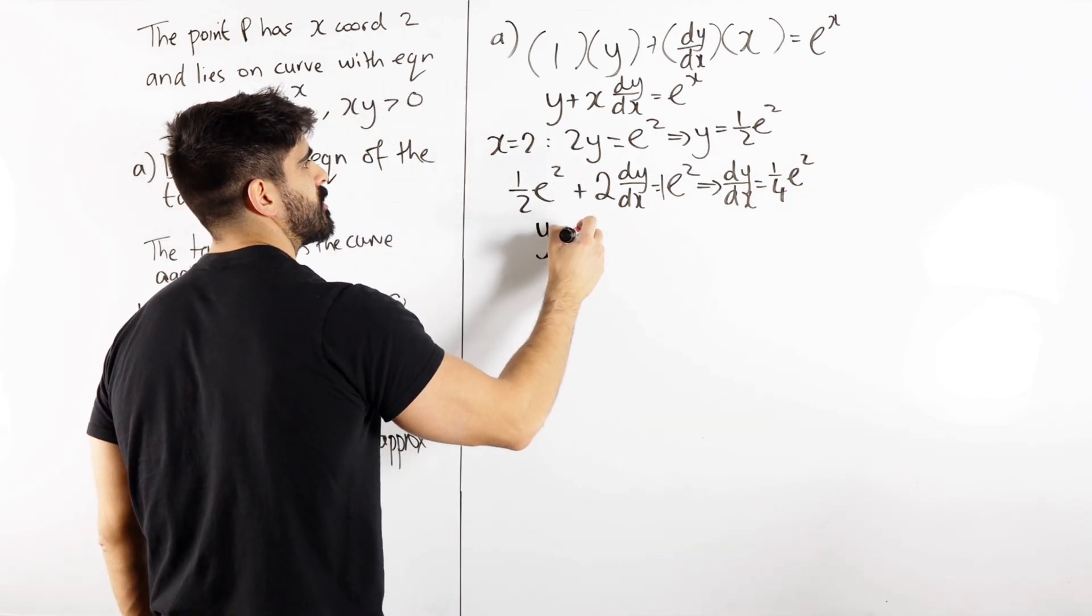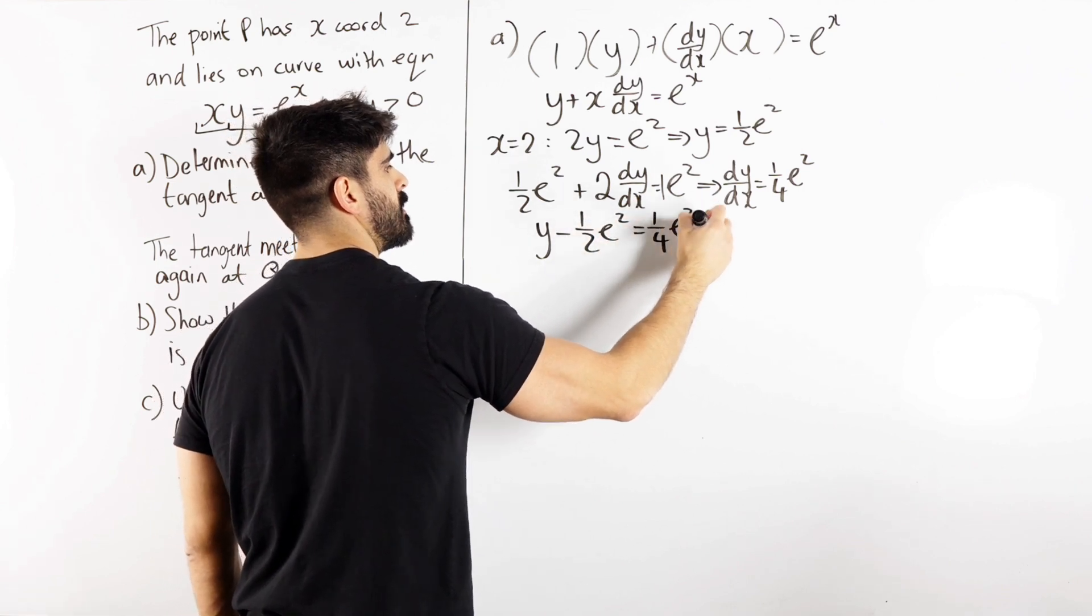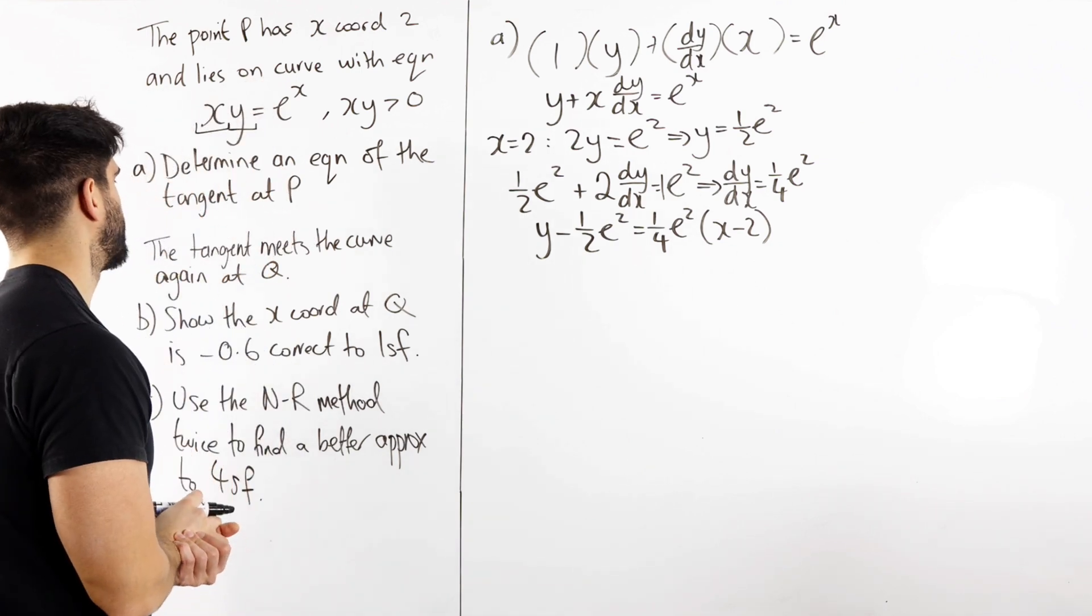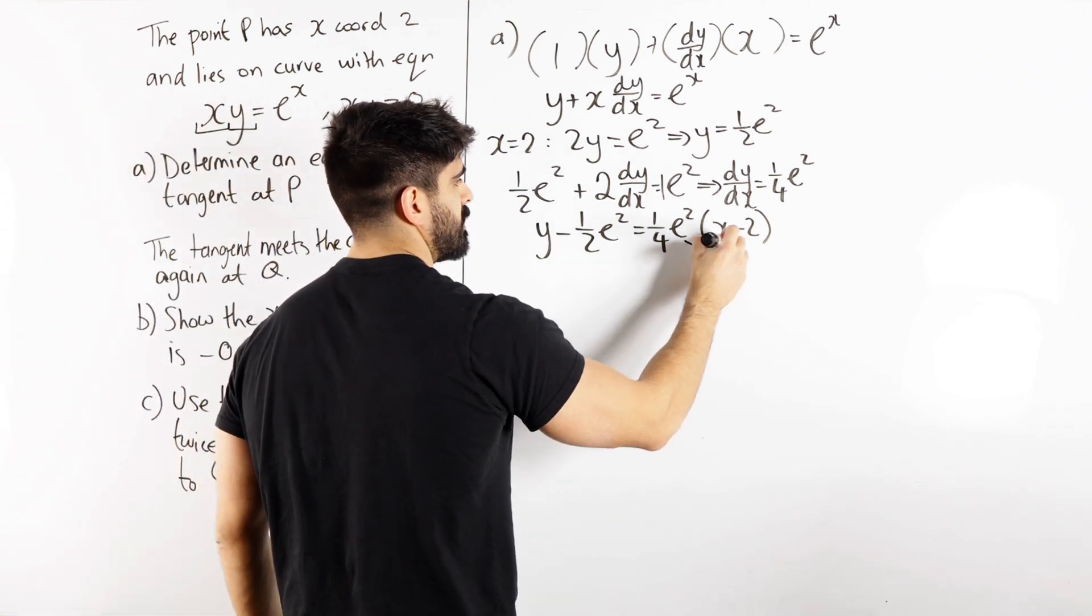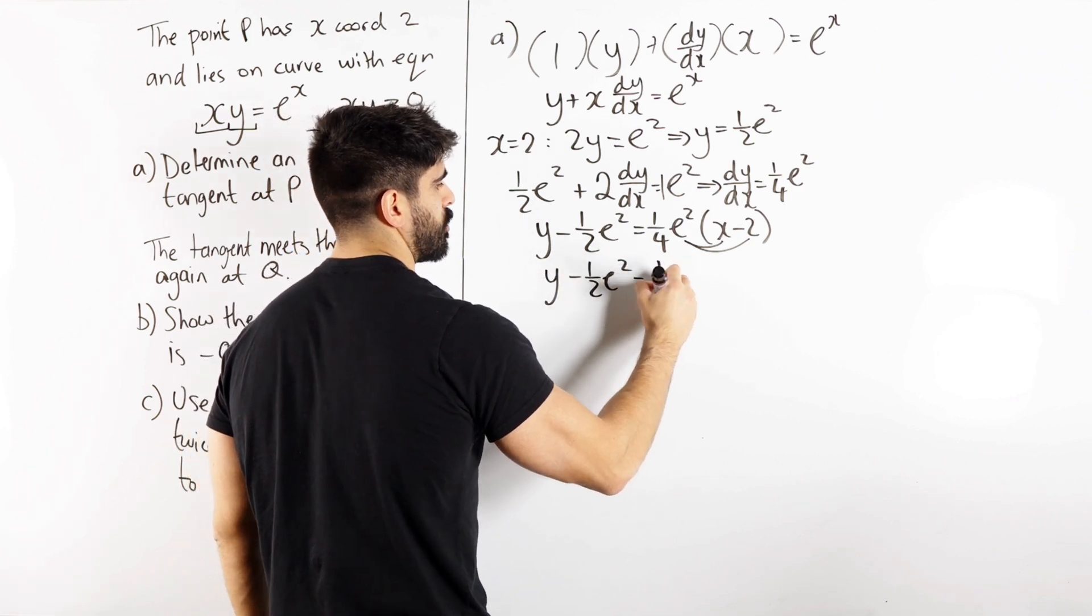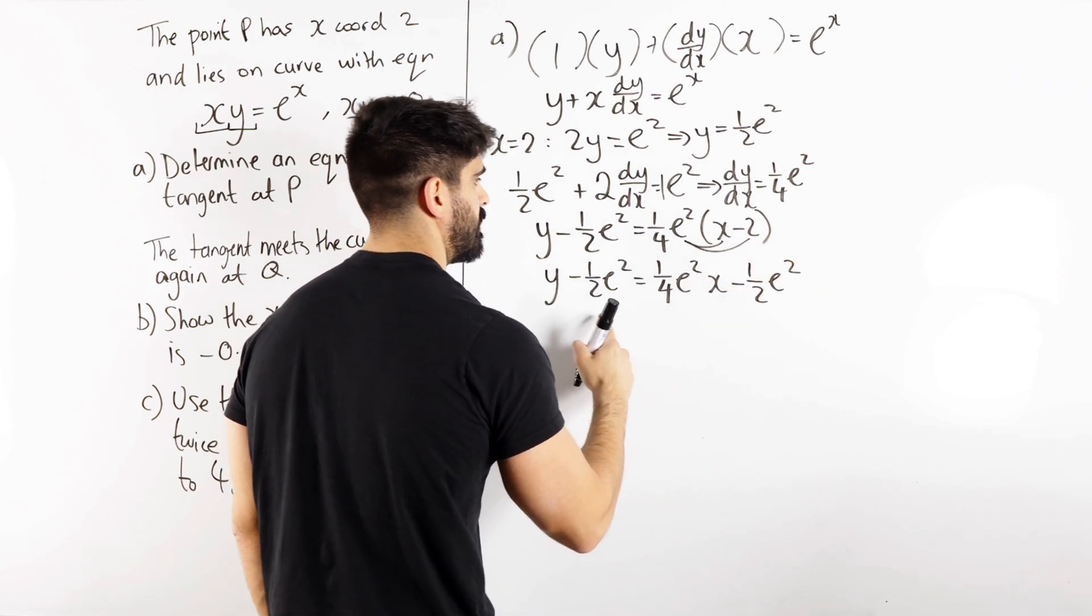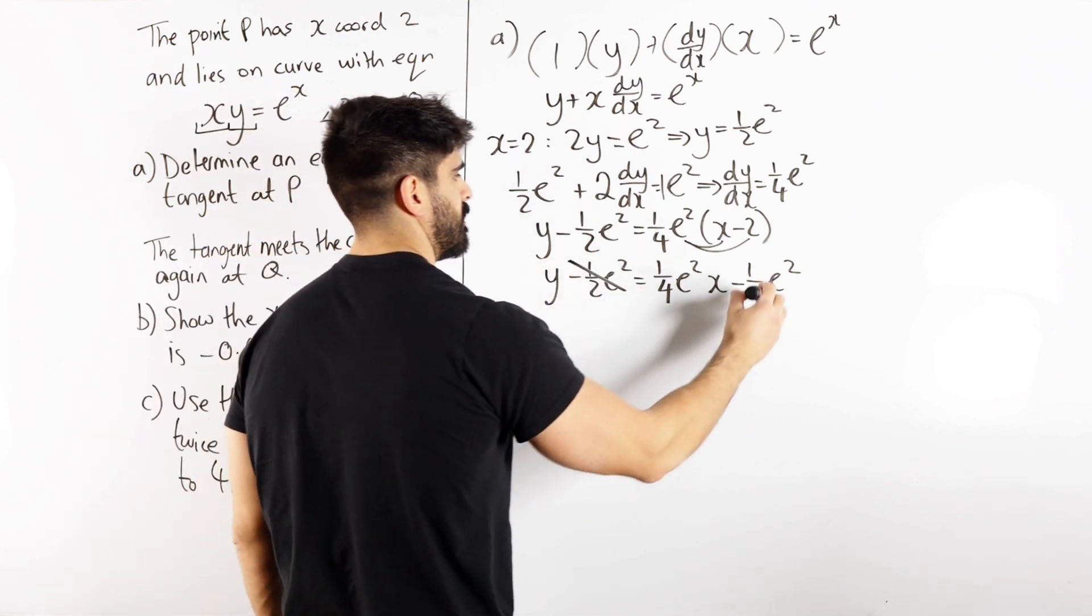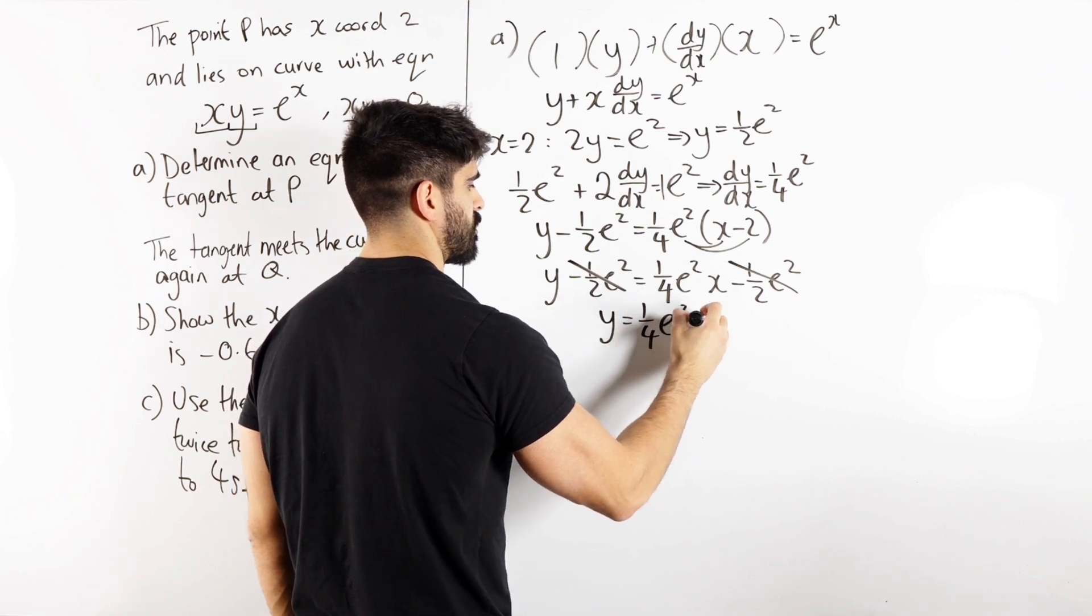So now we're going to do y minus the y coordinate equals the gradient times x minus the x coordinate. Now I'm not quite sure what form they want it in, but they are doing the tangent meets the curve again at q in the next part. So I think rearranging for y makes the most sense. So we have y minus a half e squared equals a quarter e squared times x minus 2, which is a half e squared. Oh, these just cancel. Nice.